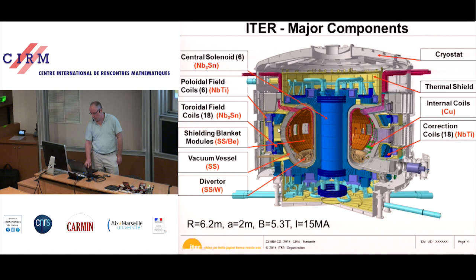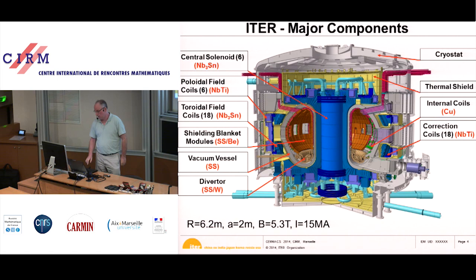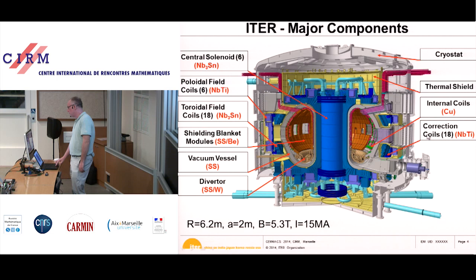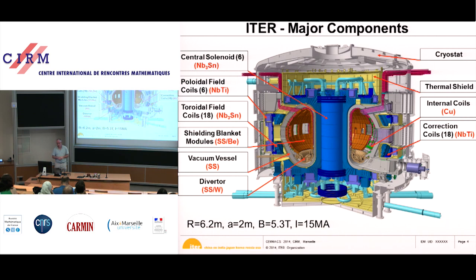The six poloidal field coils go around in the large circle. There are also error field correction coils, because the quality of the field needs to be accurate to an extreme degree — up to 10⁻⁴ to 10⁻⁵ in symmetry. To obtain that, the coils themselves must be very precise, and you also need correction coils specifically placed to cancel out errors from construction, so that the field produced inside the machine is very precise and axisymmetric.